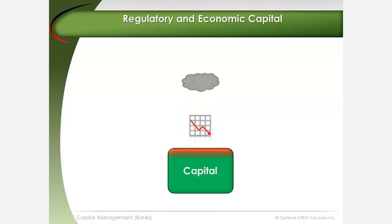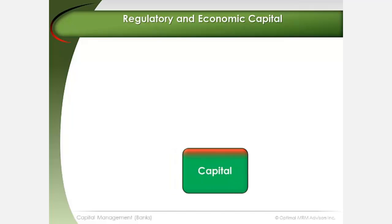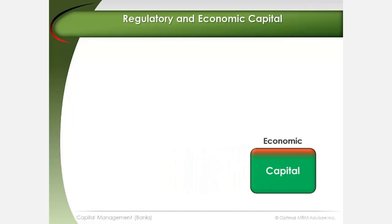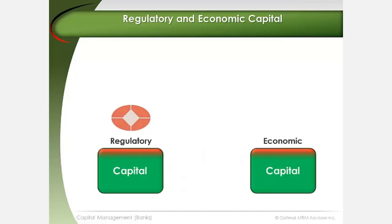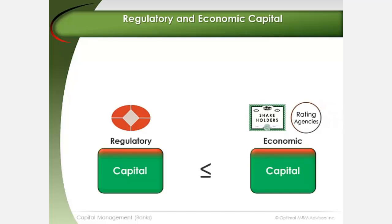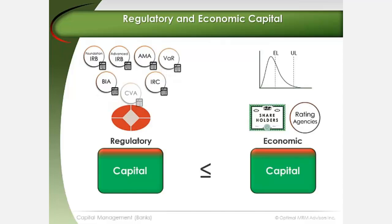Economic capital is the amount of capital that a bank needs to cover the risk of insolvency from unexpected losses. Regulatory capital is the amount of capital required by regulation. Bank shareholders and rating agencies generally demand a higher amount of capital than regulation. Whereas economic capital and regulatory capital are conceptually similar in a number of ways, an important difference is that economic capital is calculated using a bank's internal risk analysis and capital definition, while regulatory capital is calculated using models prescribed by regulators.